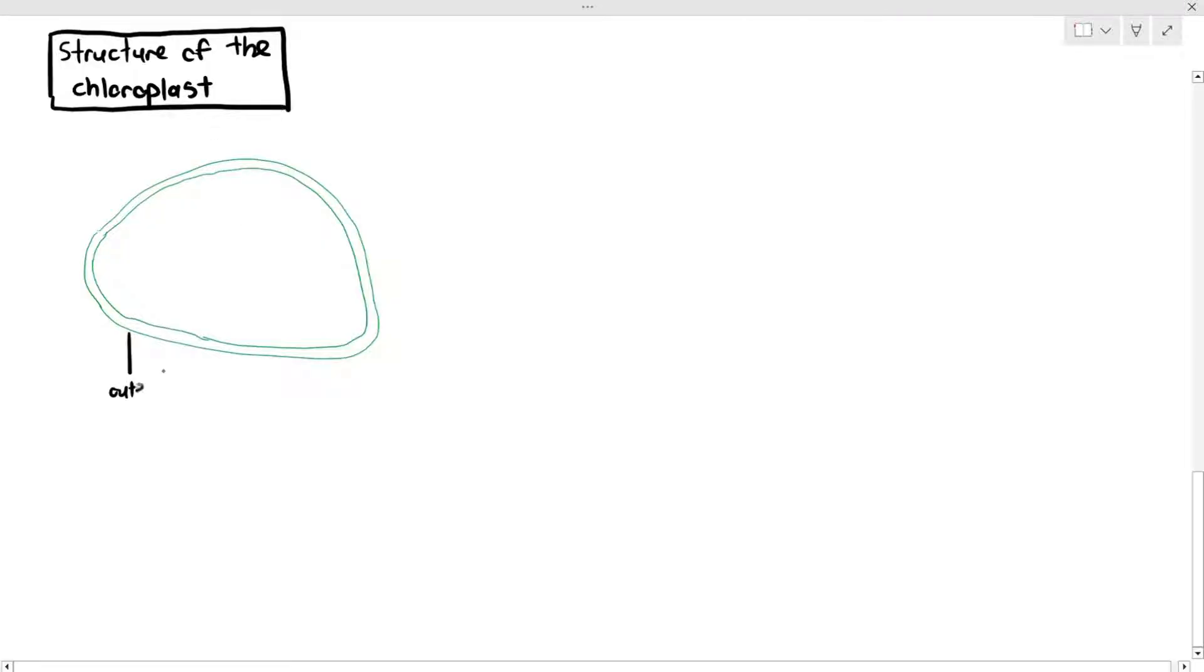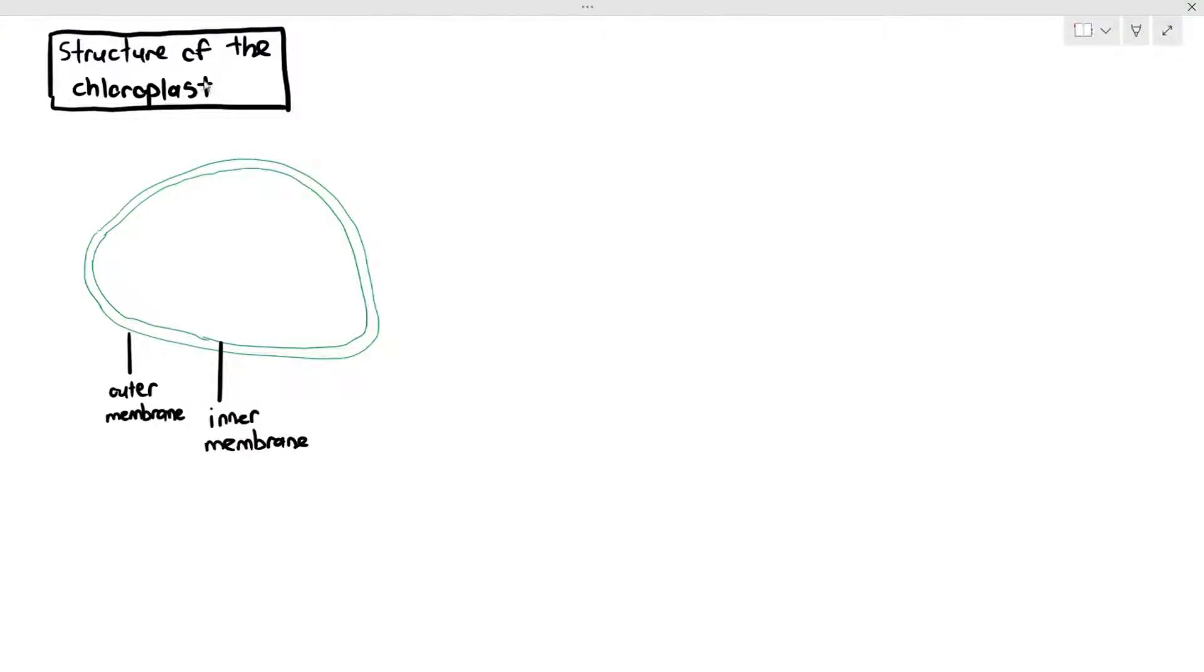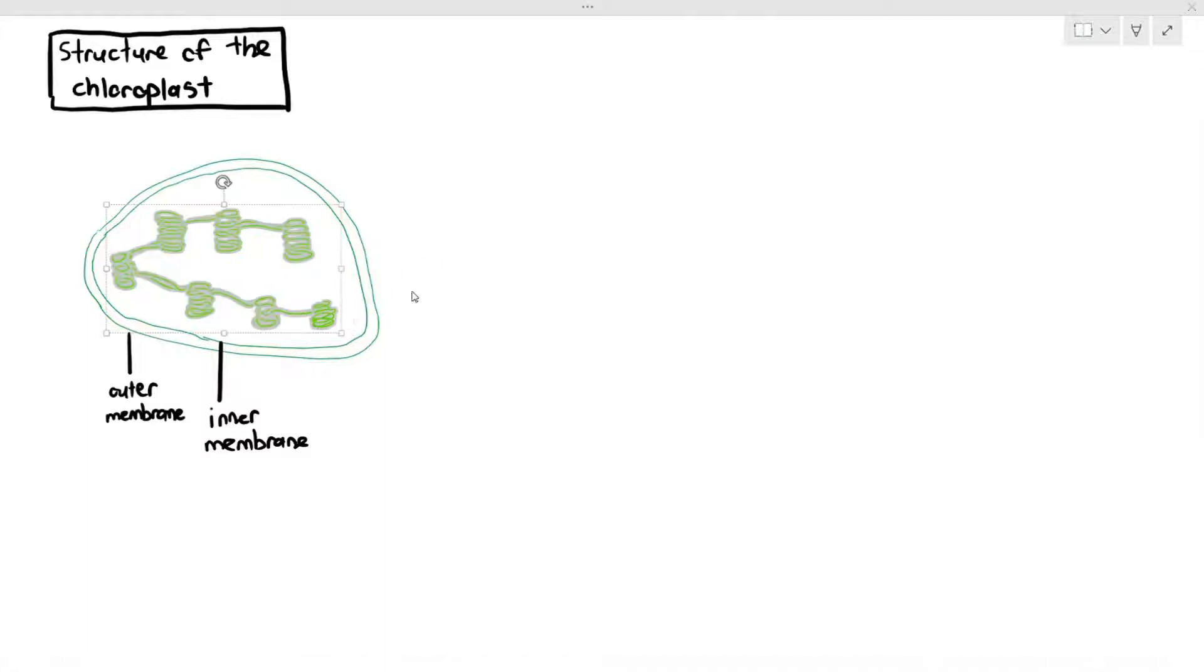Remember, in chapter 1 A-levels, we said that the chloroplast was a double membrane organelle, where it has its own outer membrane and inner membrane. Within the chloroplast, they also have their own internal membranes, which I'm drawing out, and those structures are referred to as granum. I will be explaining the granum further in detail later.